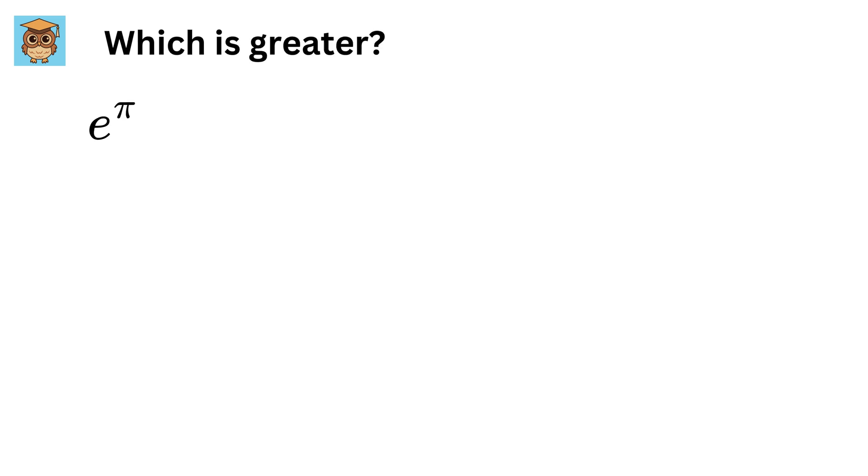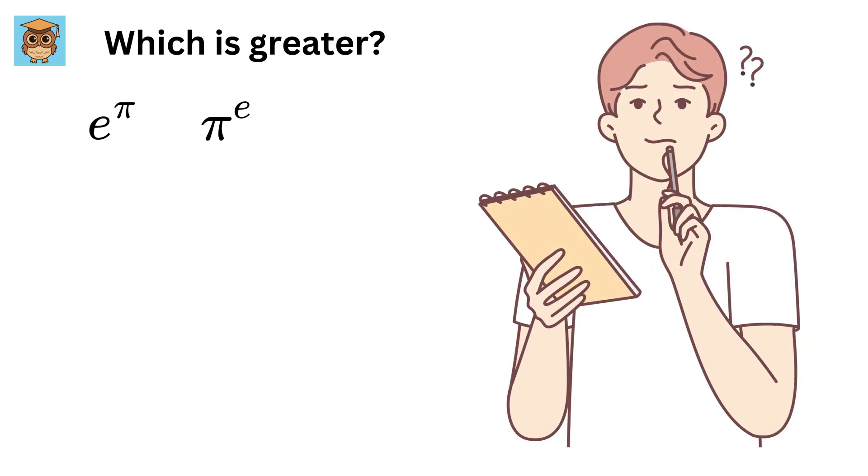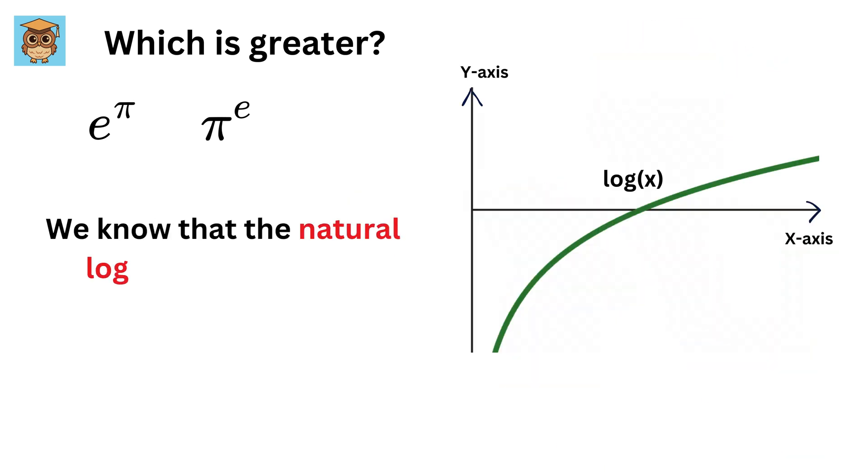Which is greater: e raised to π or π raised to e? Note that no calculators are allowed. How will you solve it? We know that the natural logarithm is a strictly increasing function.